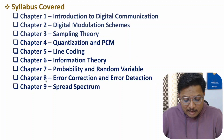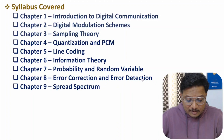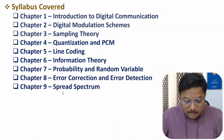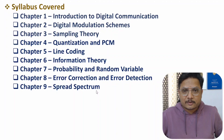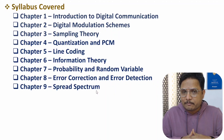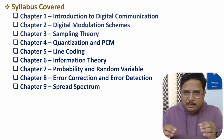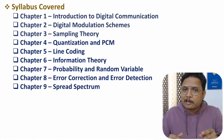In chapter six I have explained information theory, chapter seven covers probability and random variables, chapter eight explains error correction and error detection, and the final chapter covers spread spectrum. All nine chapters are discussed with great clarity, along with theory as well as examples.